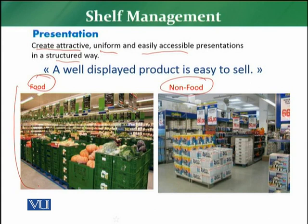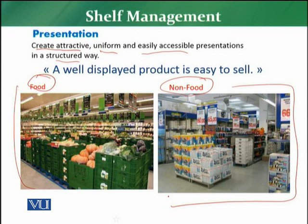In the non-food area — for example, paper or other displays — it is again very attractive with uniformity. Products are easily accessible, pricing is very clear and transparent, and the description of the products is clear. If your products are well presented — and if you yourself are well presented — you are able to sell the products.